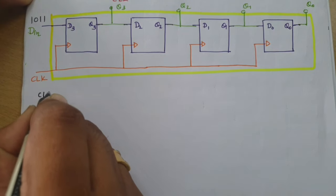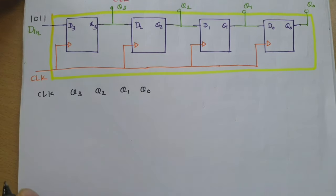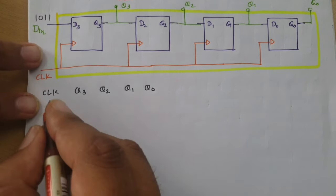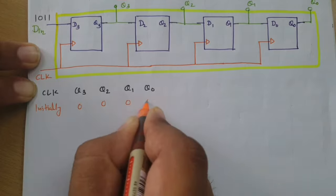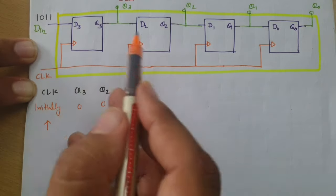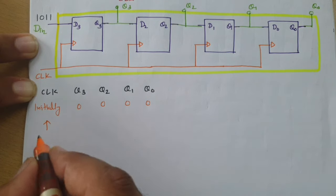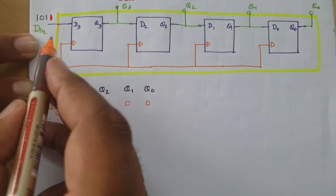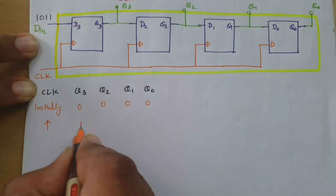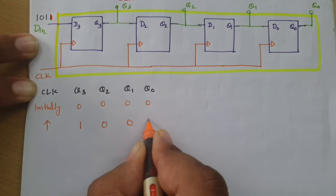We have clock, Q3, Q2, Q1, and Q0. Initially all data is zero. With respect to the positive-edge-triggered clock, data gets inserted and appears at Q3, Q2, Q1, Q0. After the first clock, the first bit '1' appears at Q3; then '1' shifts to Q3 Q2 position, and so on as the data shifts along.